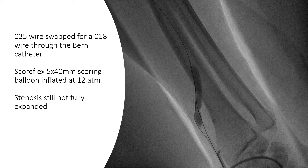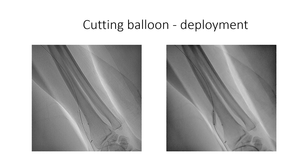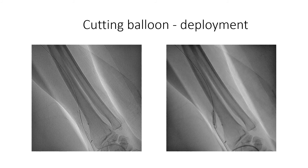It still couldn't crack the lesion. We attempted a cutting balloon — the peripheral cutting balloon from Boston Scientific. There was initial waisting but subsequently it cracked the lesion. We confirmed the position of the balloon using contrast injections. The picture here shows an injection to confirm that the balloon is placed within the vein, and again with the balloon fully inflated we did a small test to make sure that the artery is filling well and the inflated balloon remains within the vein.